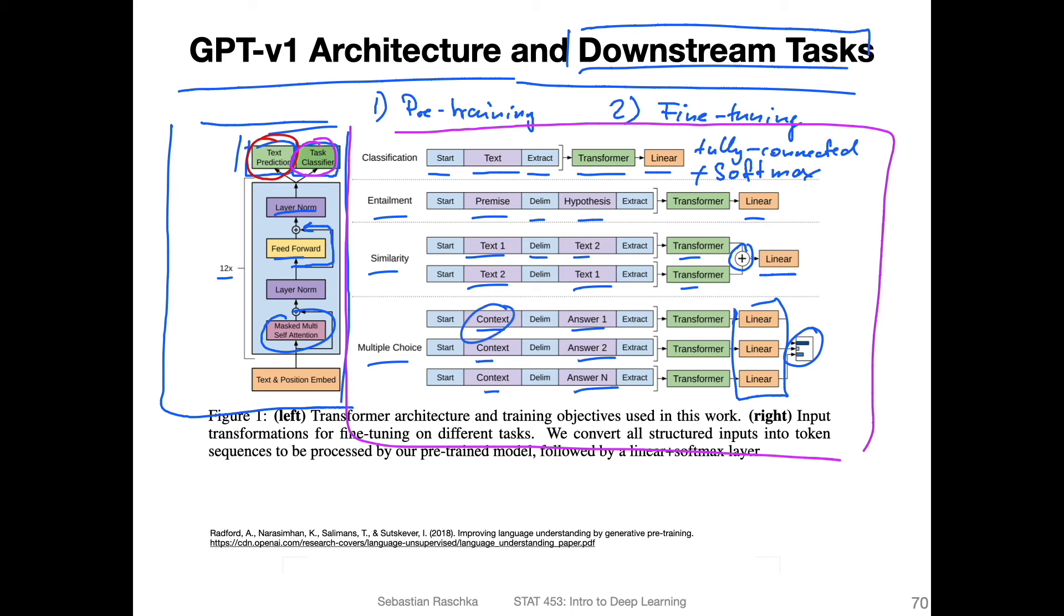All right, so again, the main idea here is that you have two steps. One is the pre-training, you train that on the next word prediction. And then you have the fine-tuning, where you fine-tune on these downstream tasks.